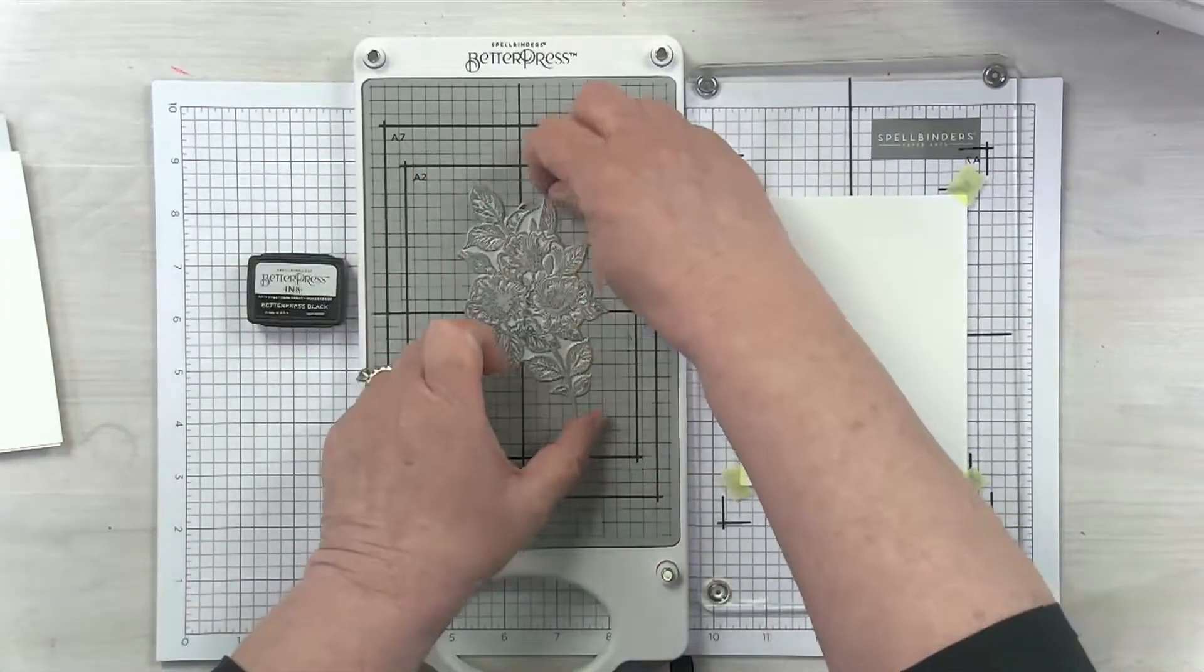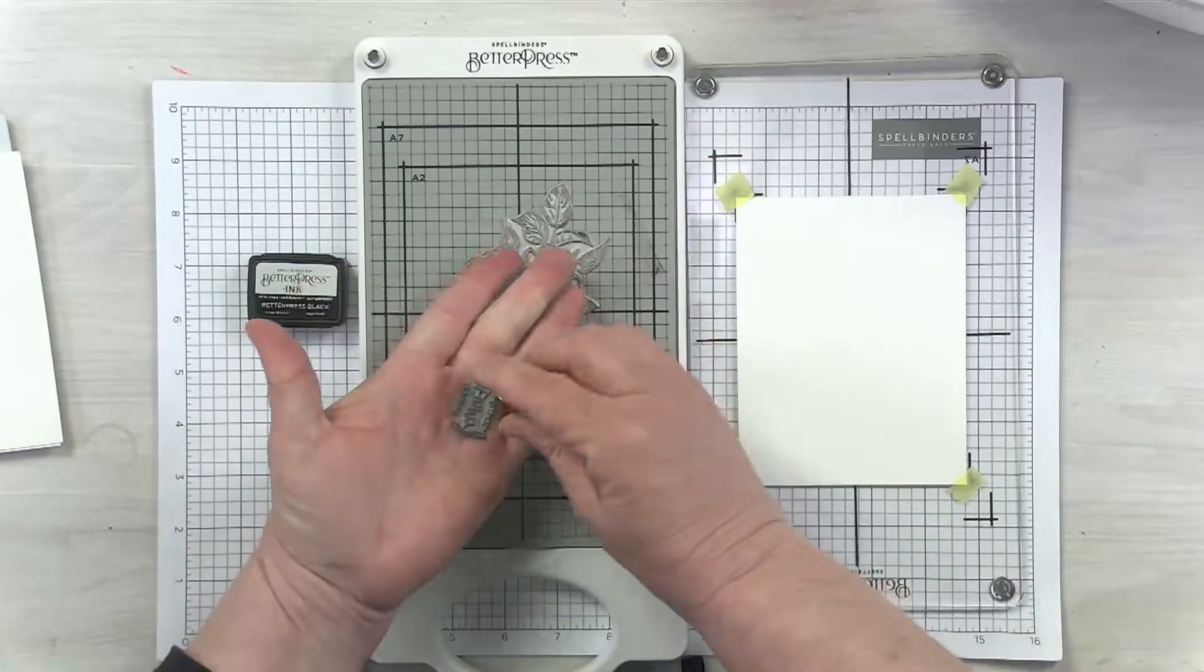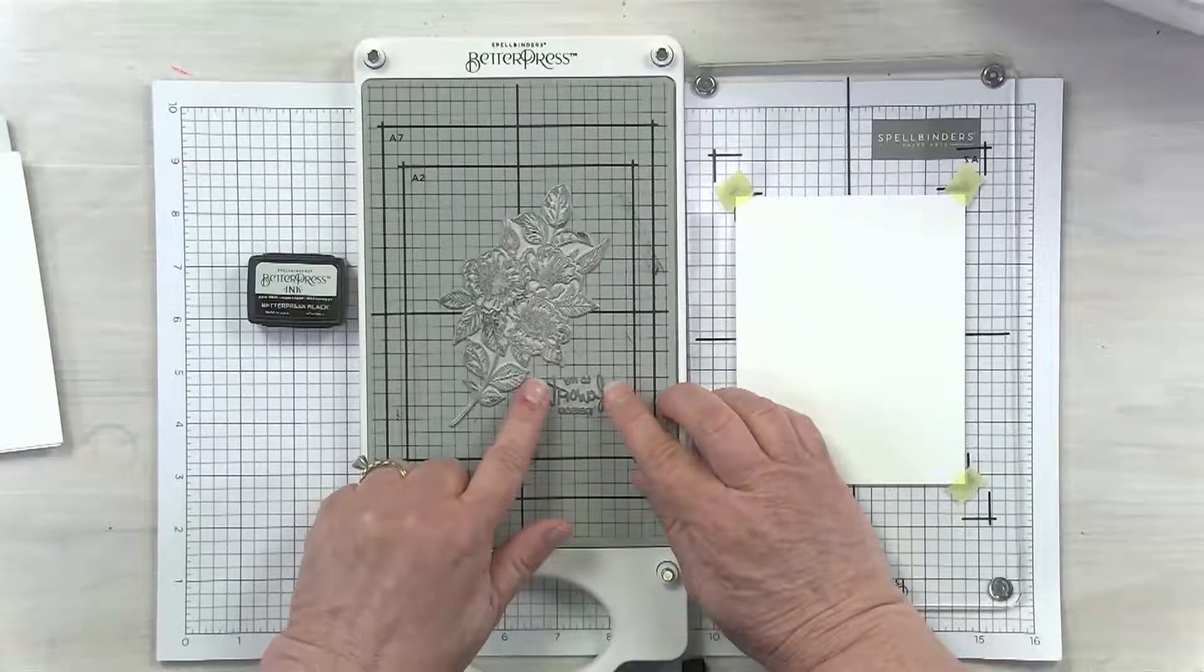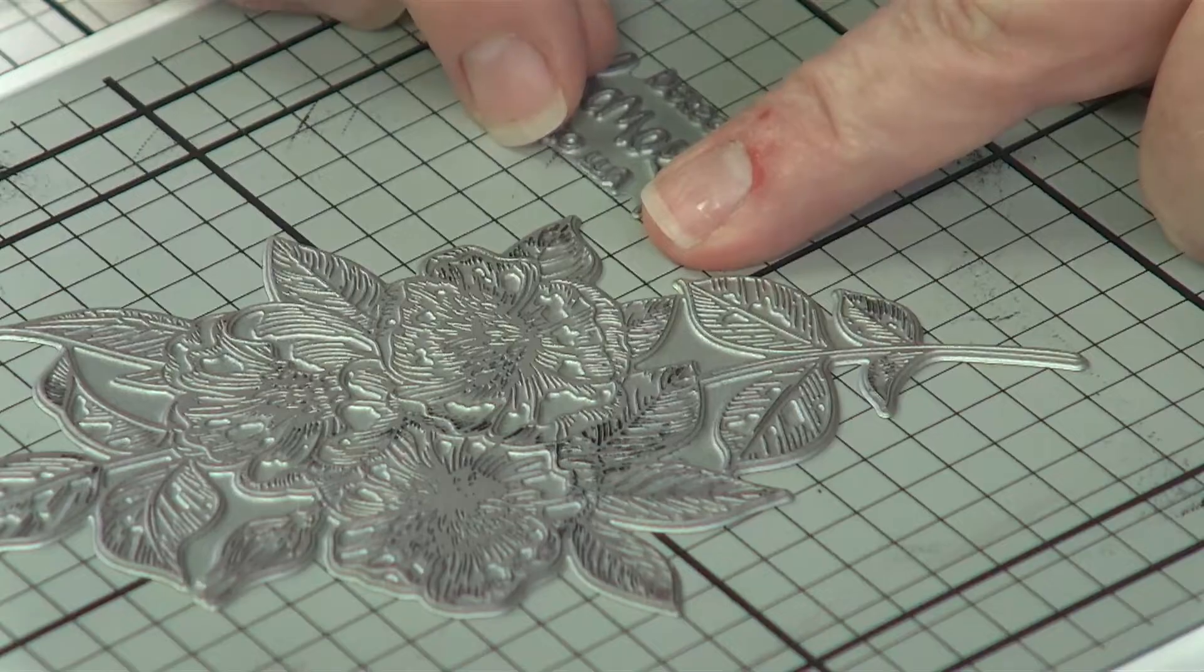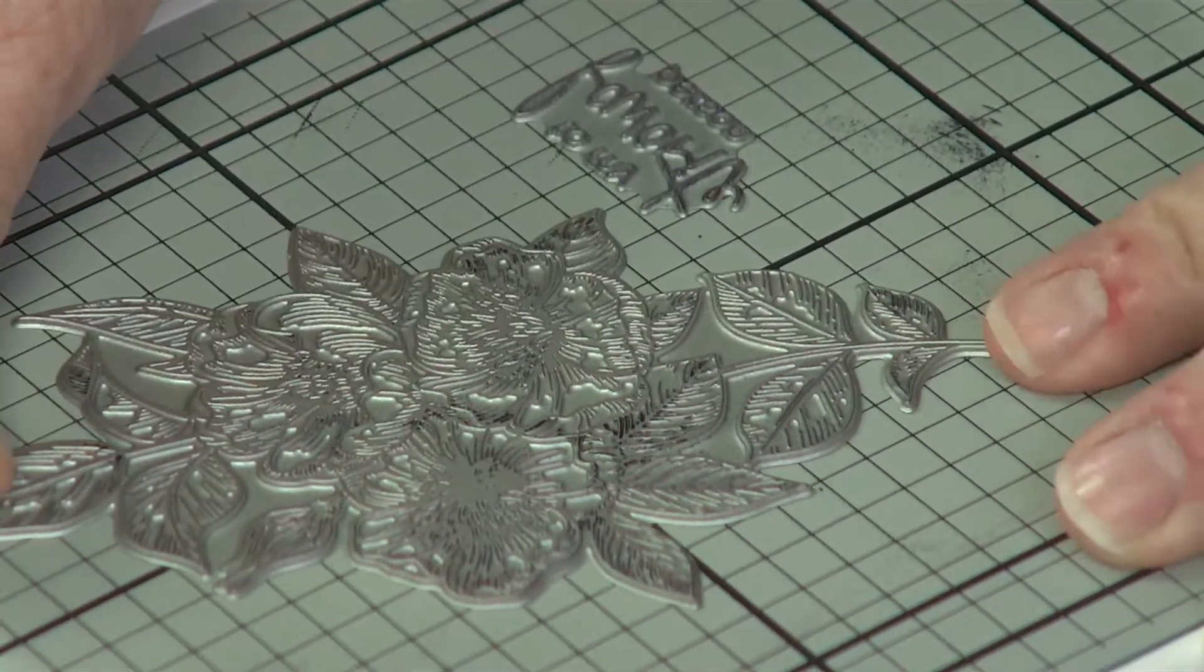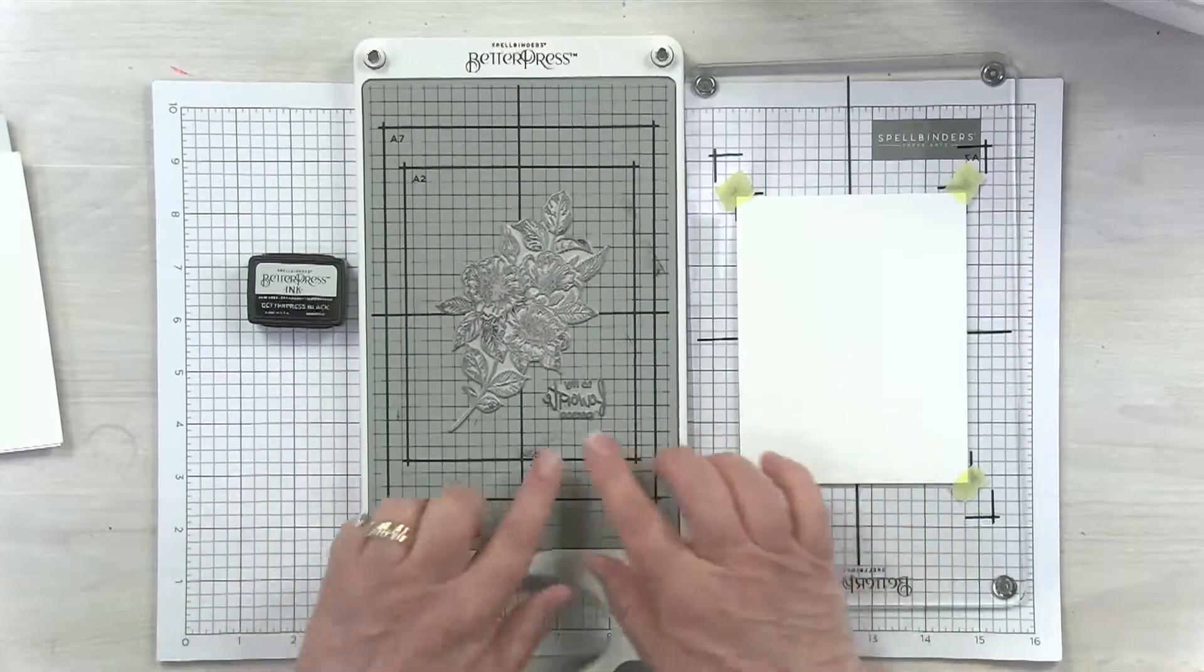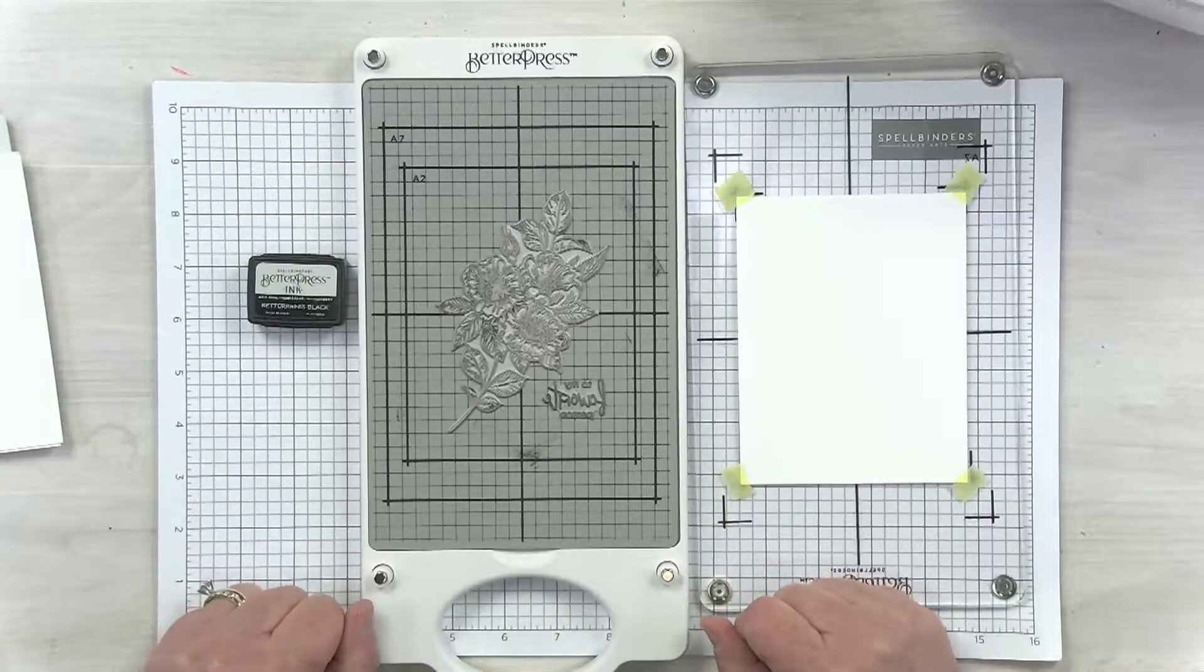Because this is magnetic, I can adjust how I want my flower bouquet to look. Maybe I want to angle it this way. You can play around and get it exactly how you want. Same for the sentiment. I think I want it down in this corner. I can use these smaller grid lines to line it up perfectly until I'm happy with it. If anything moves while you're inking, you can always double check that everything's straight before you put it into your die cutting machine.